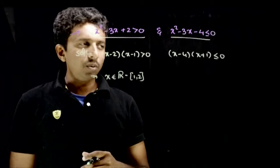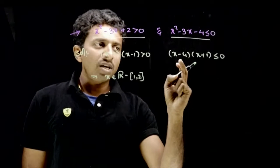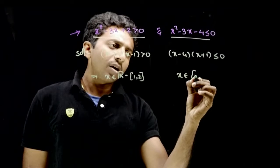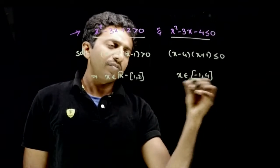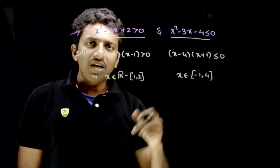And what is the solution for this? This is less than or equal to 0, so x should lie between the roots. The roots are minus 1 and 4, so x belongs to the closed interval minus 1 to 4. It's closed because equality is also there.